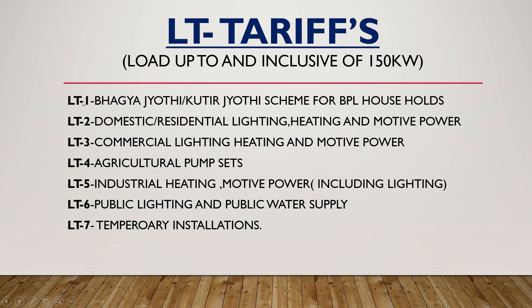The first category is called the Bhagya Jyoti and Kutir Jyoti scheme, which is made for BPL households. 40 units are free from the government — it is subsidized, meaning the government pays the charges of those 40 units to the electricity distribution company. LT-2 is the domestic and residential category, used for domestic and residential lighting, heating, and motive power. It is also applicable for government schools, colleges, and government-run hospitals. Under LT-2 there may be sub-categories that vary by state, such as LT-2A, LT-2B, etc. LT-3 is used for commercial lighting, heating, and motive power.